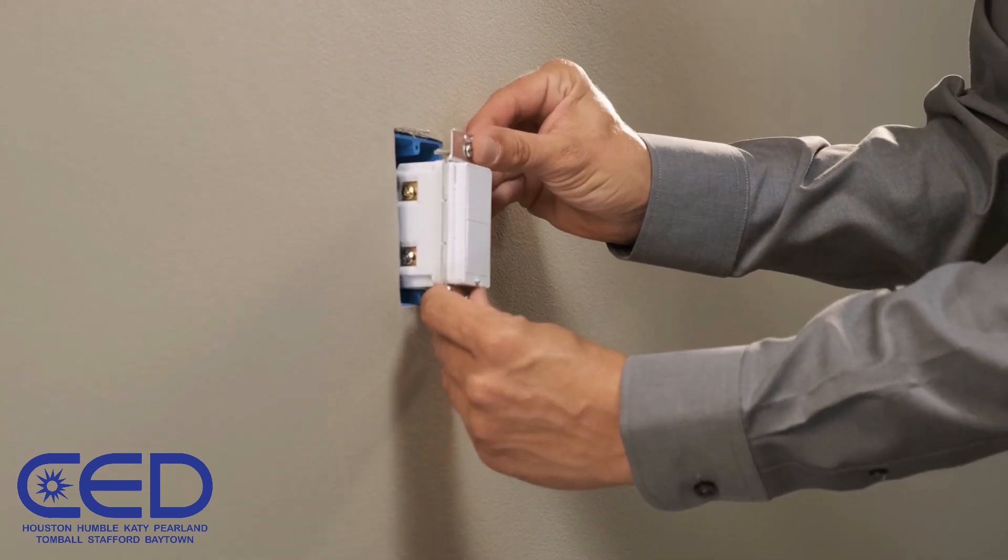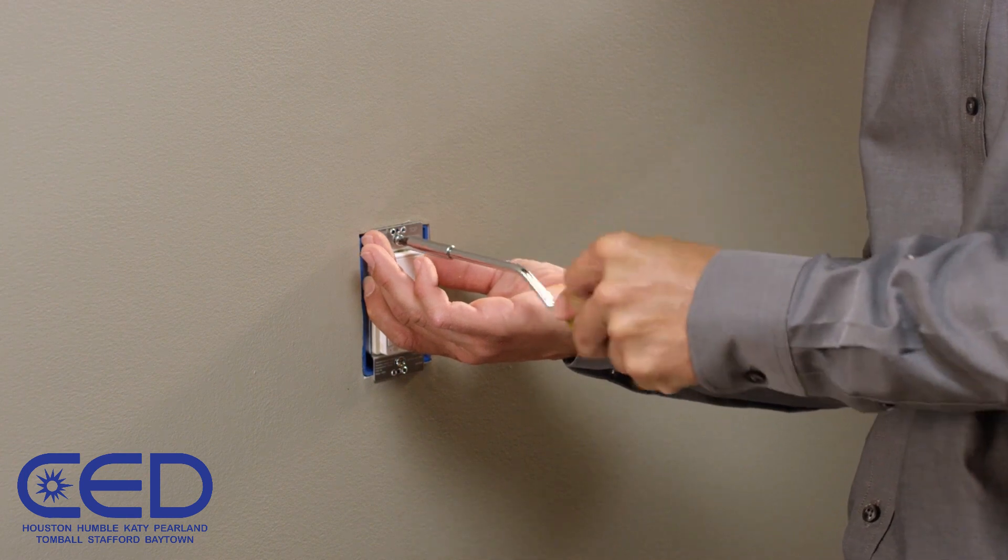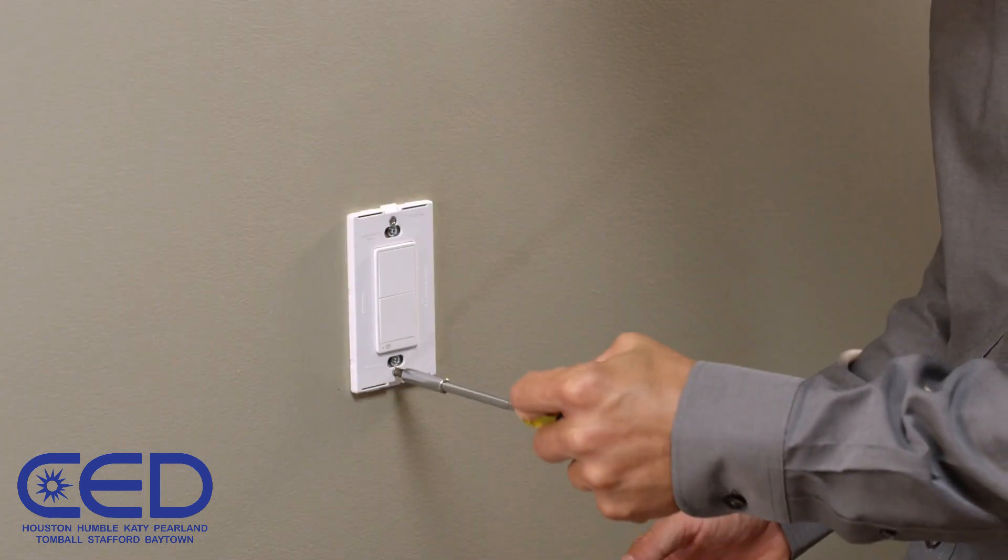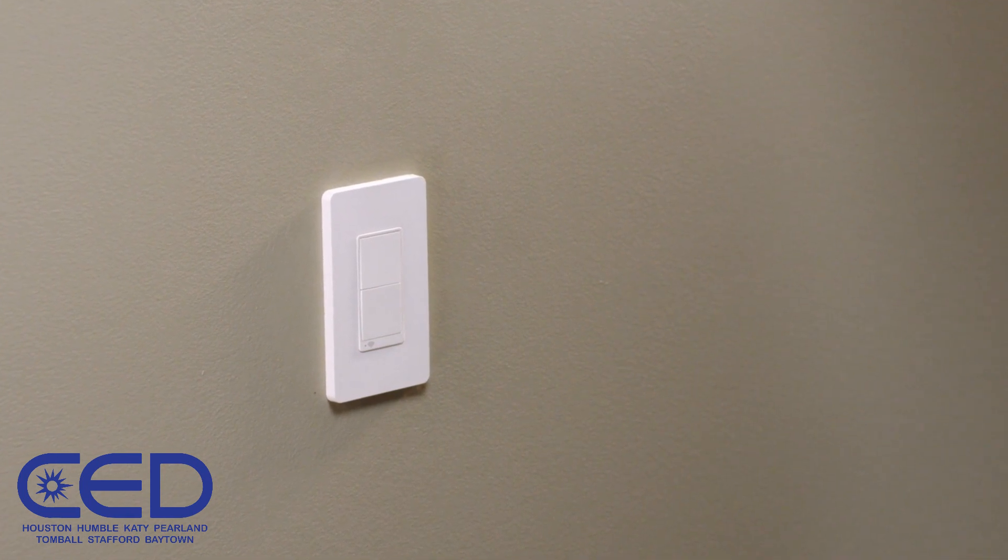After checking the connections, push the wire bundle neatly back into the wall box. Now secure the device to the wall using the screws provided. Finally, install the Square D X and XD series wall plate.